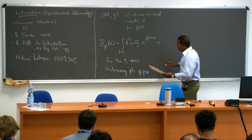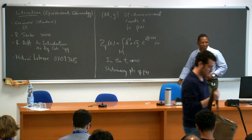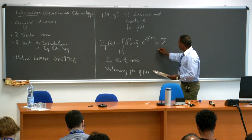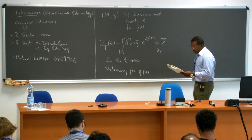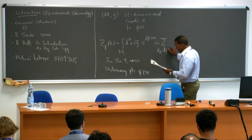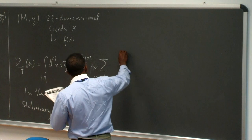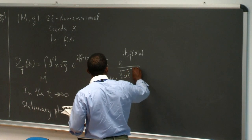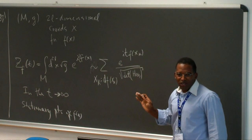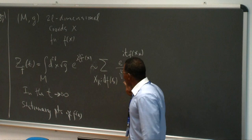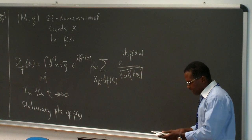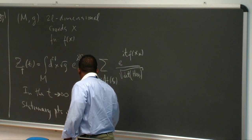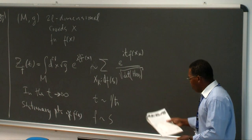One of the main formulas we like to write — approximately, so I don't have to worry about factors of 2π for now — is that x_k are the fixed points, meaning points where the differential of f is zero. Essentially, what we have is a sum over fixed points involving the determinant of the Hessian. In the context of quantum mechanics, t is related to 1/ℏ and f is related to the action.